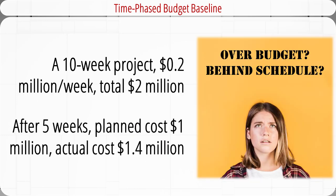The importance of a time-phased budget baseline can be demonstrated by the following example. The development of a new project is to be completed in 10 weeks at an estimated budget of $0.2 million per week, making the total budget $2 million. The planned budget for the first five weeks is $1 million. However, at the end of the fifth week — the midpoint of the project — the actual spending is $1.4 million. So what can we conclude from here?